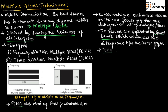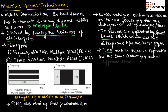In TDMA, the mobile receives information on the same carrier frequency but at a different time. As shown in the figure, there is only a single carrier frequency, but it is divided into time intervals so that users can access the information on the same frequency band but at different times.